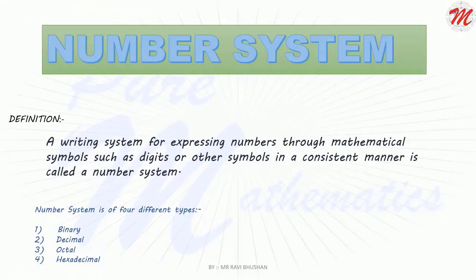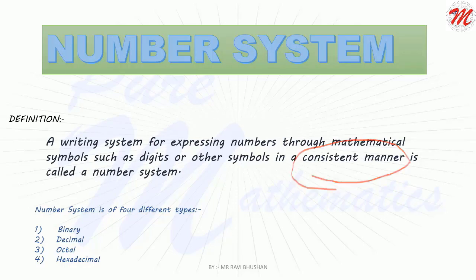What is a number system? A number system is a way of writing a number on the basis of a set of rules. A writing system for expressing numbers through mathematical symbols such as digits or other symbols in a consistent manner is called a number system. Consistent manner means a set of rules — if we write all the numbers, all the magnitudes in a number system through a definite rule, then we can name that system as a number system.